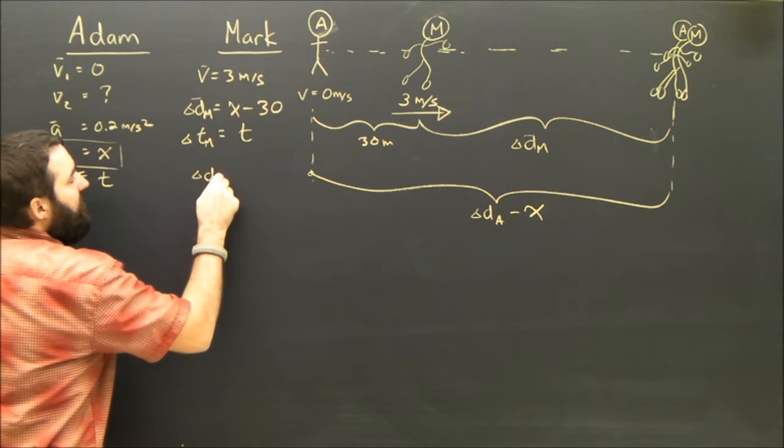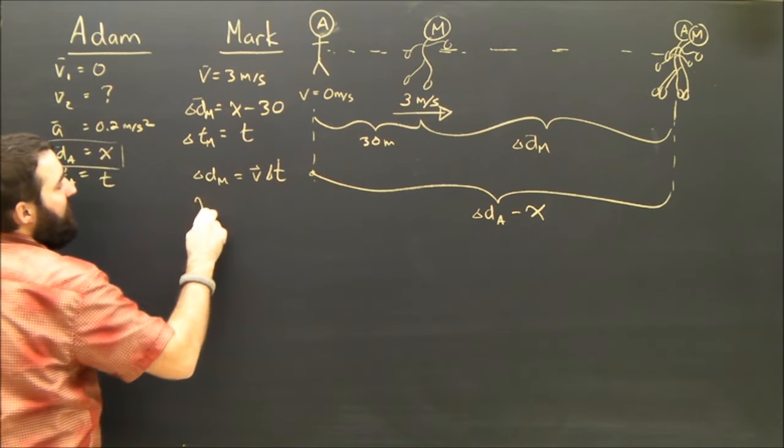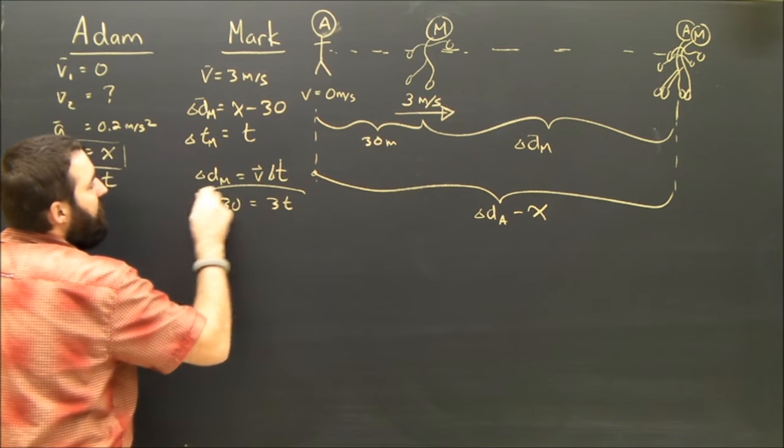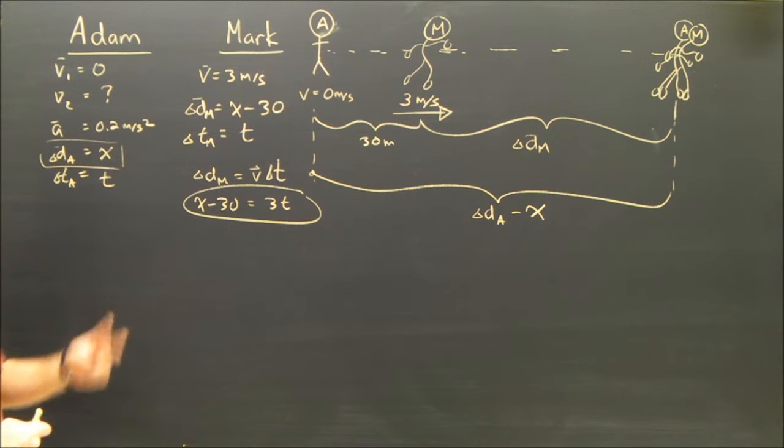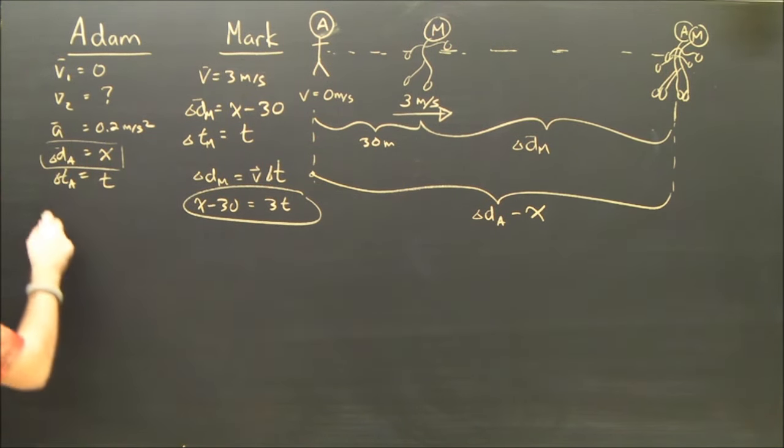we see we know that displacement equals velocity times time. Subbing in, we see that x minus 30 equals 3t. Again, two equations, one equation, two unknowns. We can't solve that. We need another equation here.